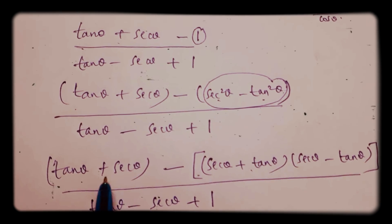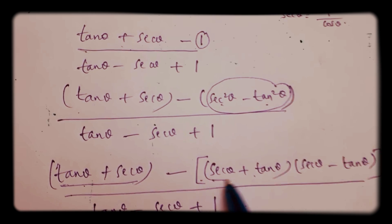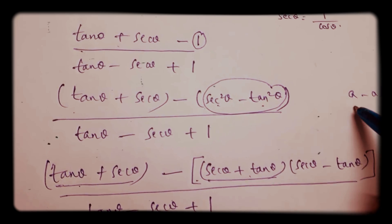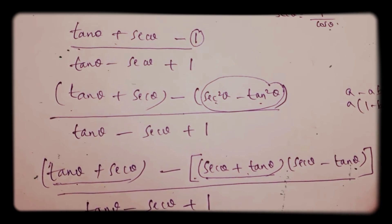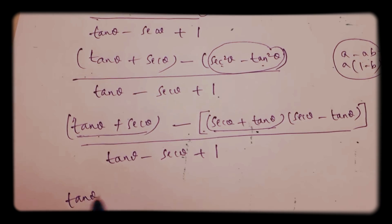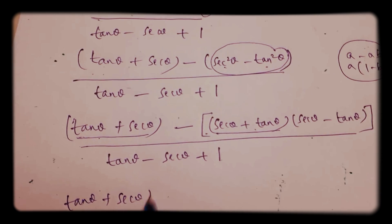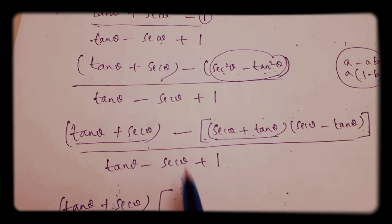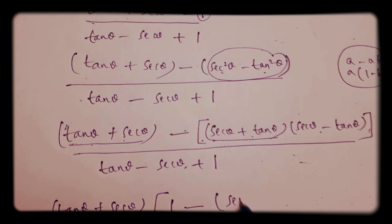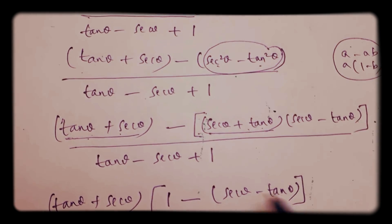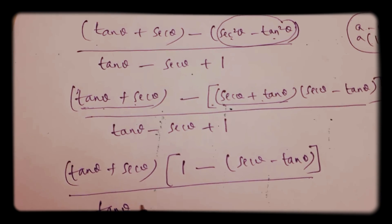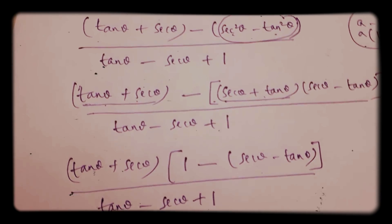In the numerator, we can take (tan θ + sec θ) common from the two terms. For example, a - ab, if we take a common, we get a(1 - b). In the same way here, taking (tan θ + sec θ) common, we are left with (tan θ + sec θ)(1 - (sec θ - tan θ)), with the denominator remaining as tan θ - sec θ + 1.